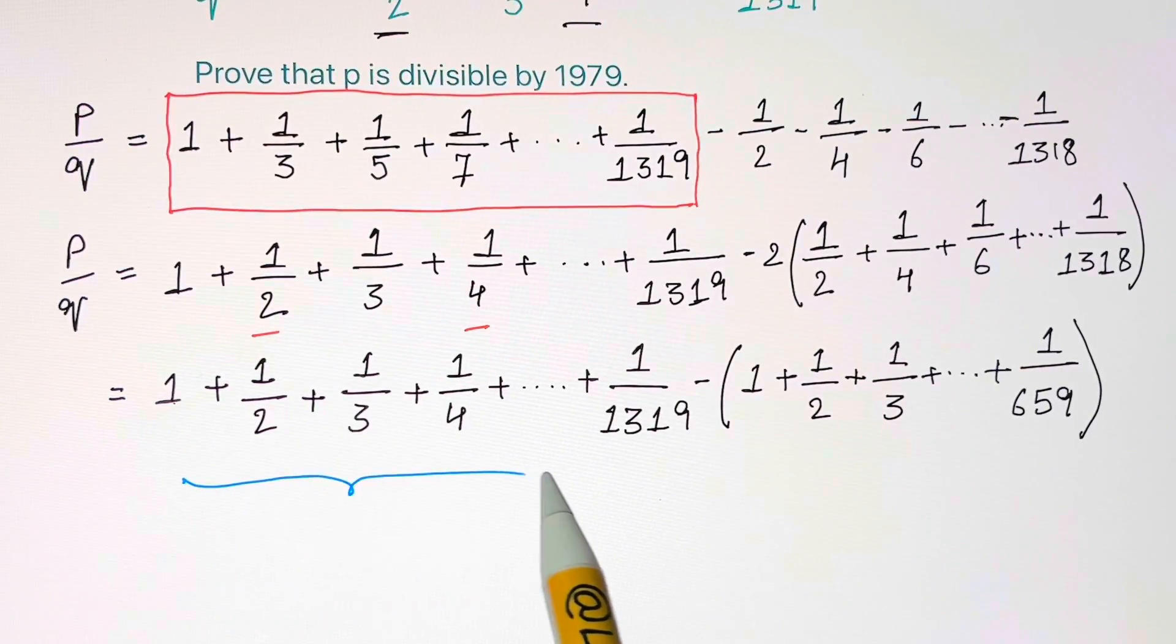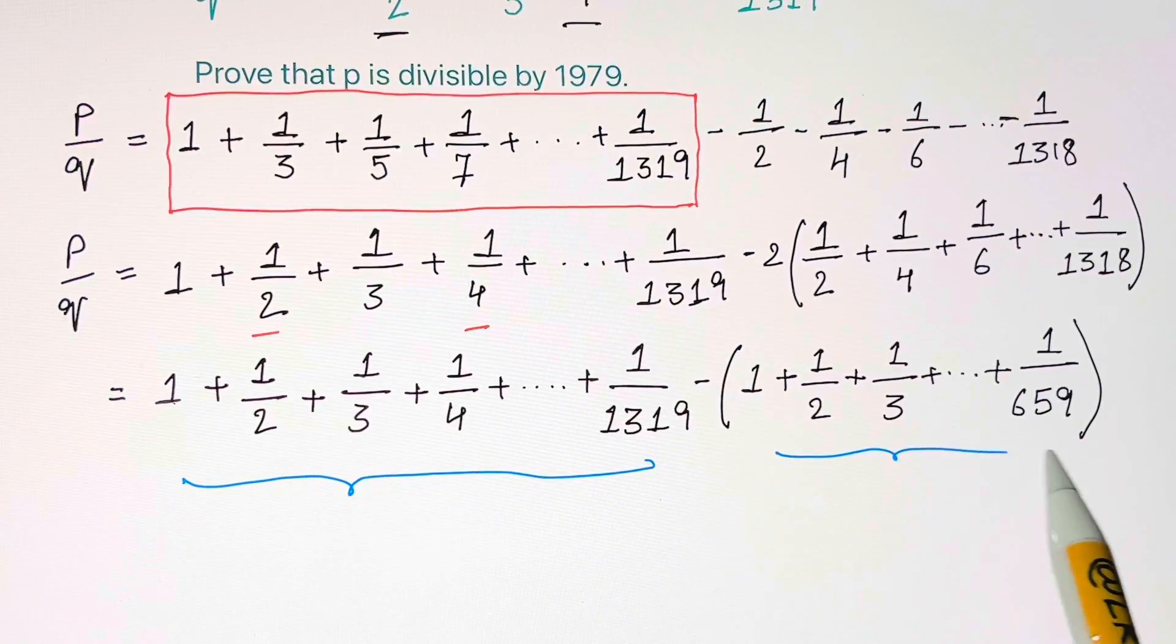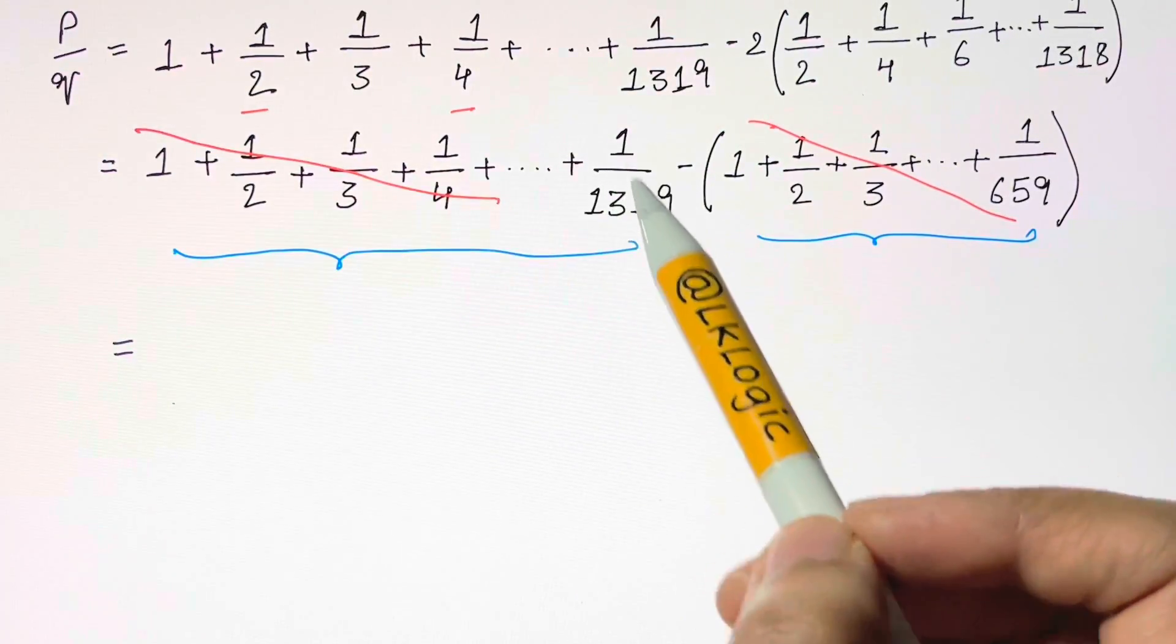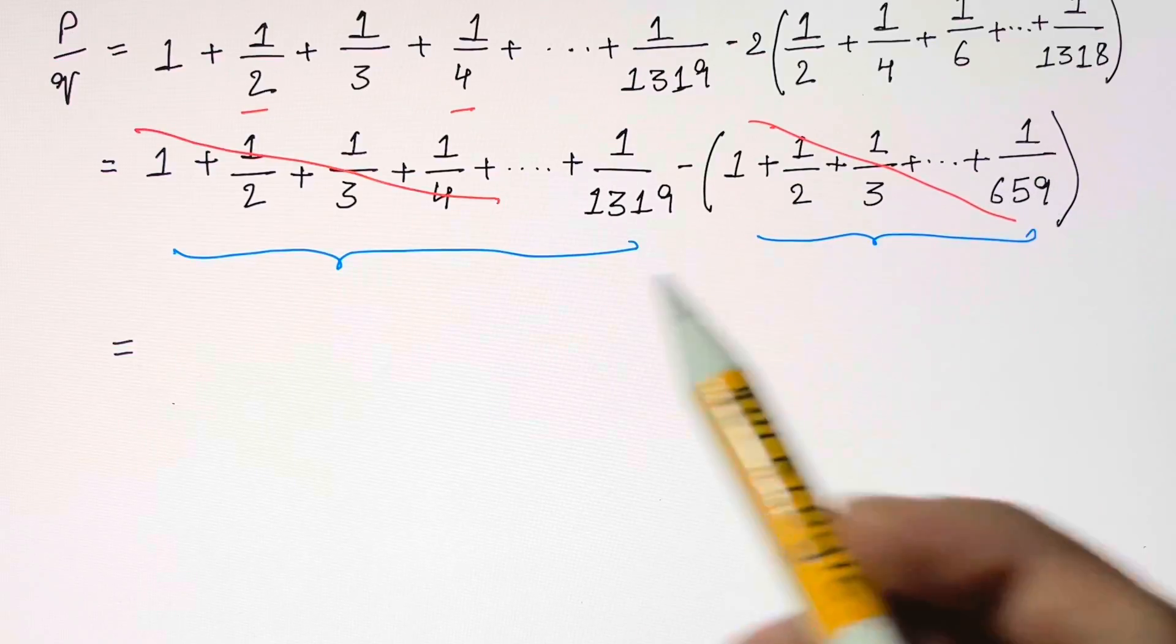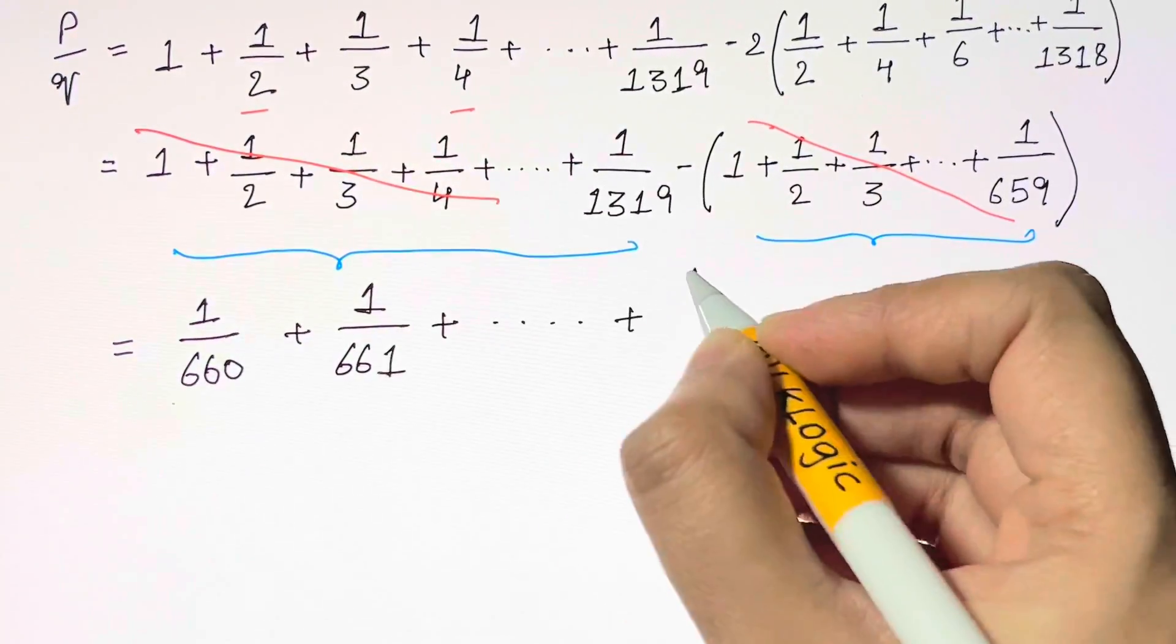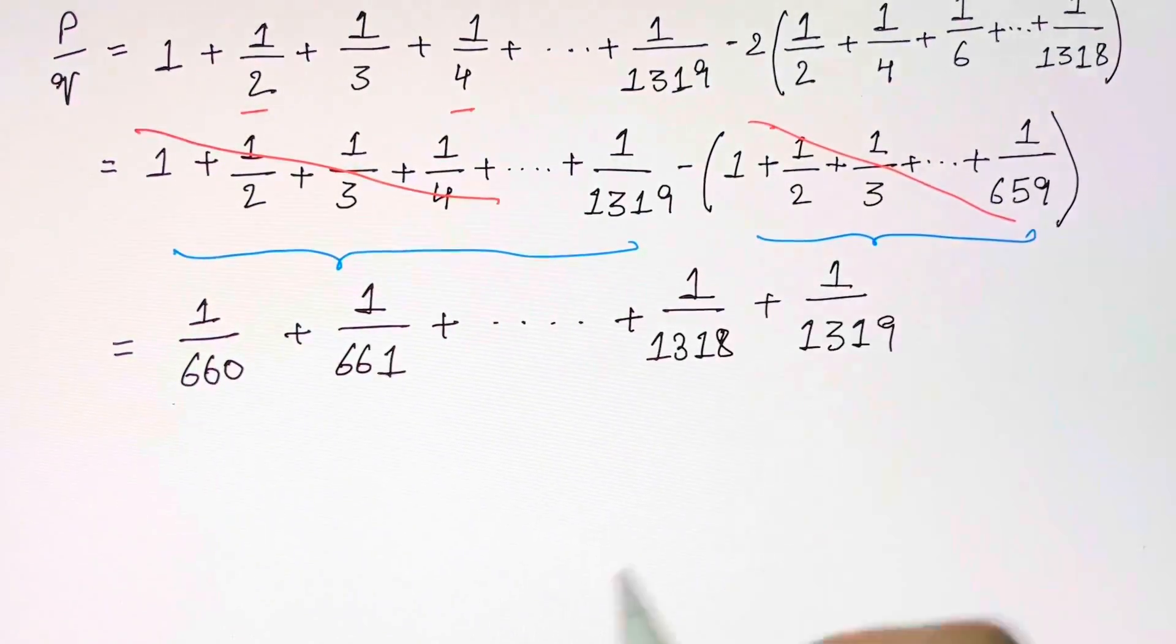Now we have two finite harmonic series and we're going to cancel them out. This expression now becomes fractions starting from 1 over 660 plus 1 over 661 up to 1 over 1318 plus 1 over 1319.